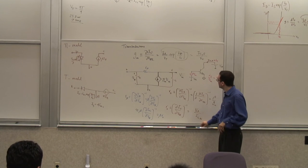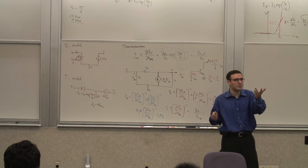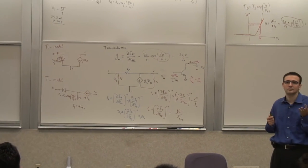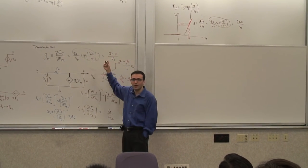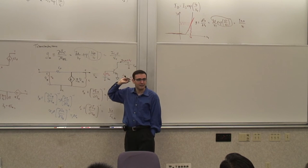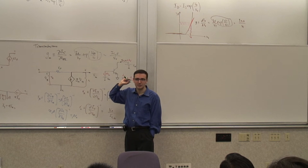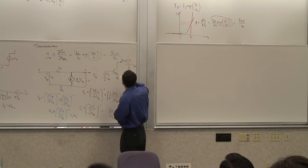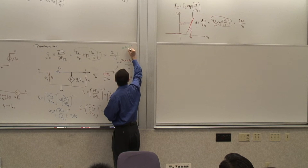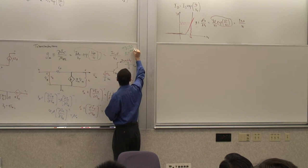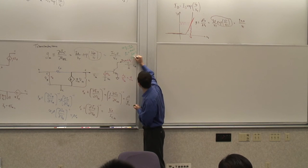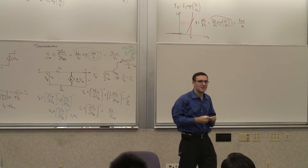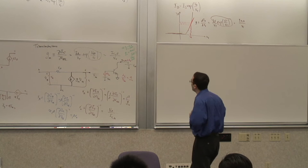Let's look at some typical numbers. At IC = 1 mA at room temperature (300 K), gm ≈ 40 mA/V (or 40 milliSiemens). So you can remember: at 1 mA the gm is 40 mS; at 100 μA it's 4 mS, and so on.